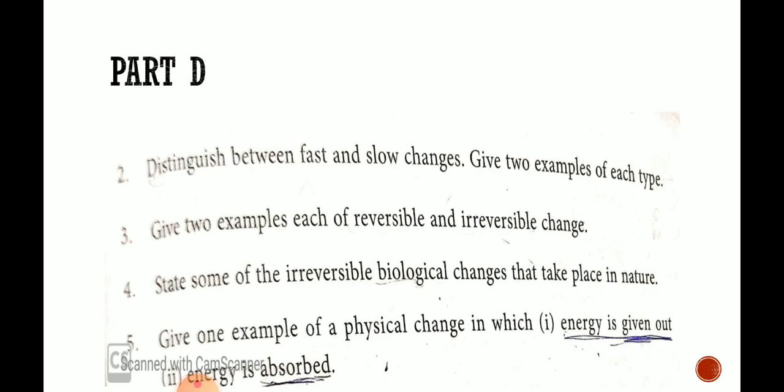Then give two examples each of reversible and irreversible changes. So bachche on page number 73, difference bhi de rakha hai, difference ke saath iske examples bhi de rakha hai. And state some of the irreversible biological changes that take place in nature. So nature ke according aapko dekhna hai jo irreversible changes hote hai jo ek bar hone ke baad woh dubara se nahi vaapis hote hai. Toh is tariqe se jyaase hum le sakte hain, deforestation.